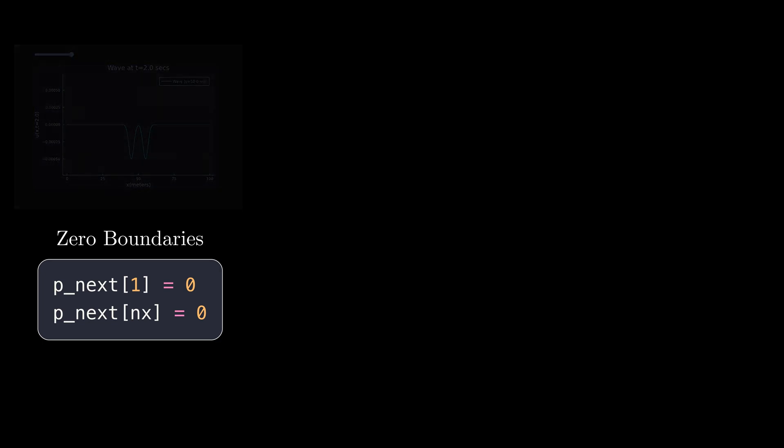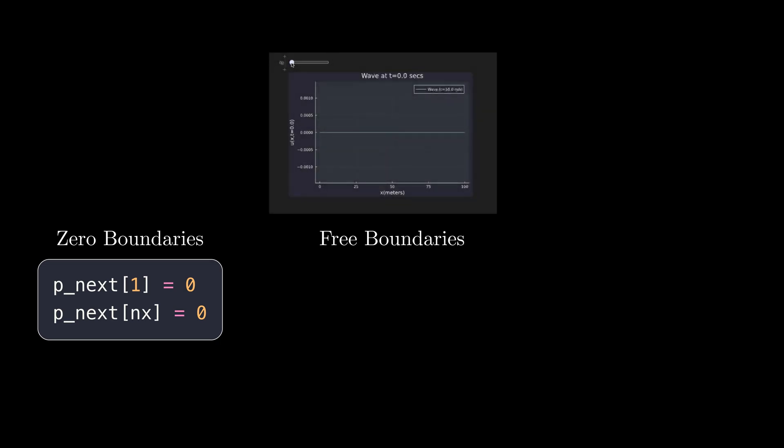Another thing I can do is make the boundaries free. Mathematically, this is enforced by making the first derivative at the boundary 0. Using finite difference approximation, I can rewrite this and implement the free boundary condition in the code quite easily.